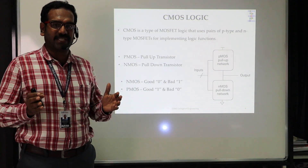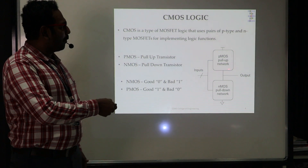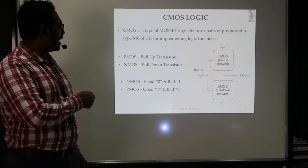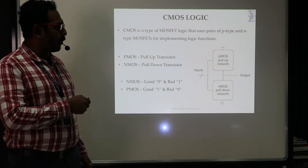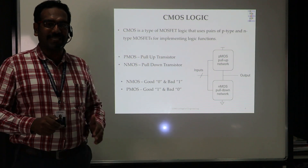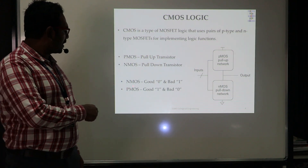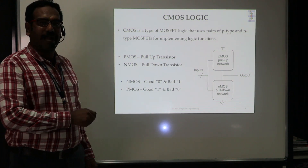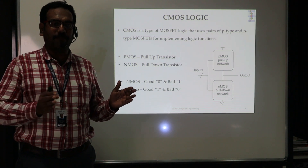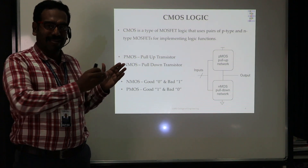Here I have shown how the CMOS network — the CMOS transistor network — is built up. You can see the PMOS pull-up network and NMOS pull-down network. PMOS transistors are always used to construct the pull-up network and NMOS transistors are used to construct the pull-down network. NMOS transistors can produce a good logic 0 output but a bad logic 1, whereas PMOS transistors give a good logic 1 output but a bad logic 0. So when we combine PMOS and NMOS transistors, we can obtain both good 0 and good 1 — that is the most important parameter for designing CMOS logic.